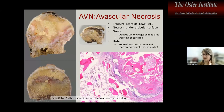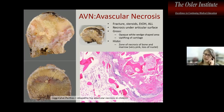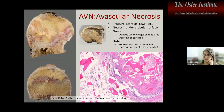Avascular necrosis appears as a wedge-shaped, opaque infarct under the surface — you see dead bone with grungy pink material. Legg-Calvé-Perthes disease is hip avascular necrosis in kids, considered idiopathic, occurring as the same kind of wedge-shaped infarct.